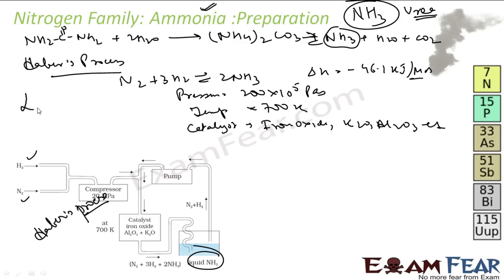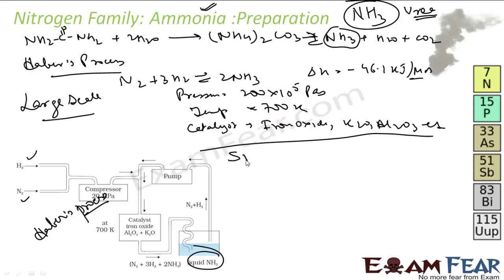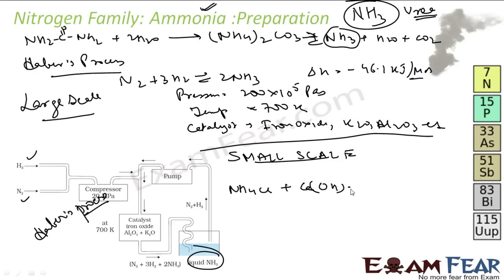This is large scale. To create such high pressure you need costly apparatus. So on small scale, ammonia is produced from ammonium salts. These ammonium salts decompose when treated with caustic soda or lime. For example, let's take Ca(OH)2 — reacting with ammonium salt gives NH3, H2O, and CaCl2.